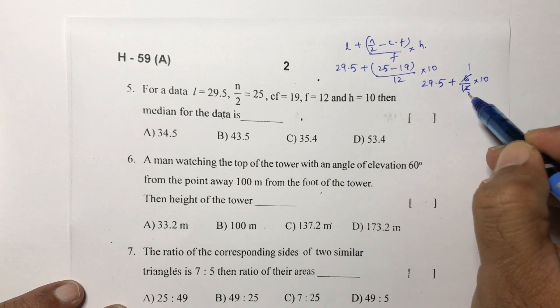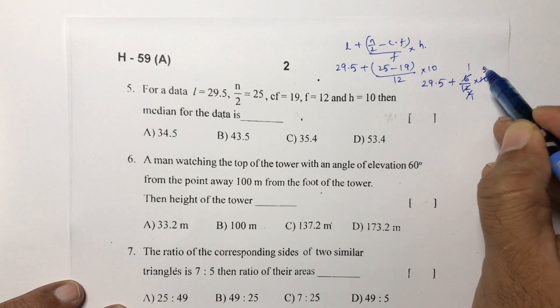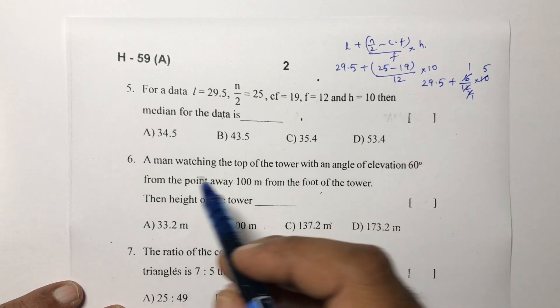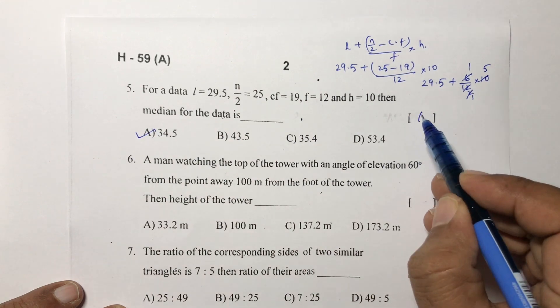6 times 2, 2 times 5. So 29.5 plus 5 is 34.5. The correct option is A.